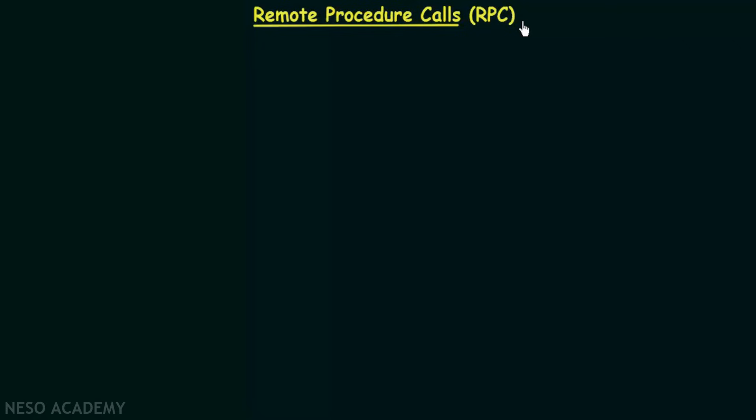Remote procedure calls come into play when we want processes residing in different systems, connected over a network, to communicate with each other. Think of a scenario where one process residing in one system wants to communicate to another process which is physically in another system, and these two systems are connected via a network. In this kind of scenario we need to use remote procedure calls.